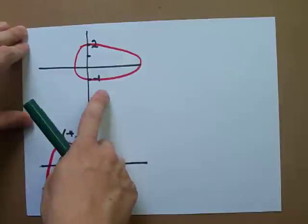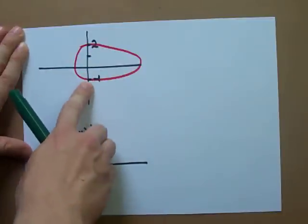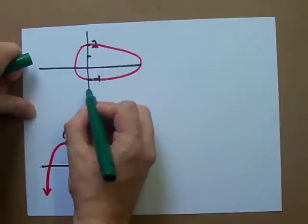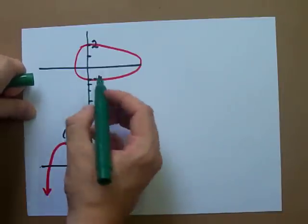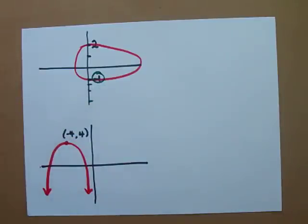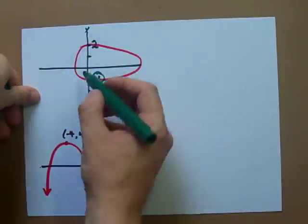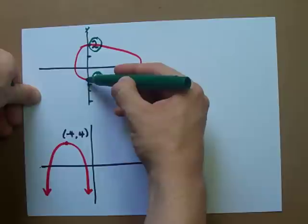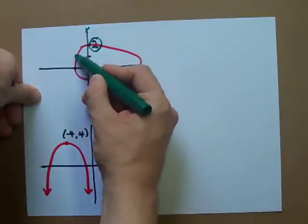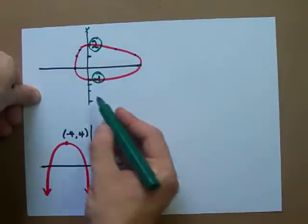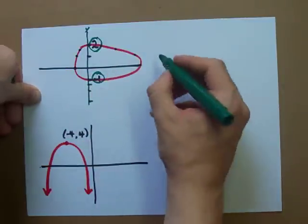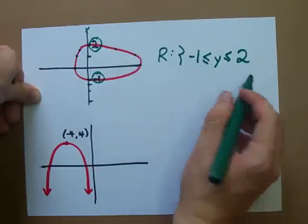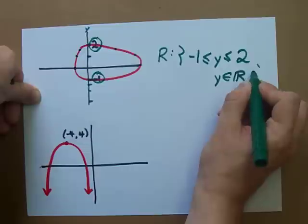More likely, you'll be asked to find the range from a graph. The range is the y-values you can get out. Looking at this graph, I can't get negative 3, negative 2, or negative 1.5. At negative 1 is where the graph starts in terms of the y-axis, and it goes all the way up to positive 2. Y can be anything in between — it can be 0, 1, 1.5 — anything including these endpoints. So the range goes from negative 1 all the way up to 2.